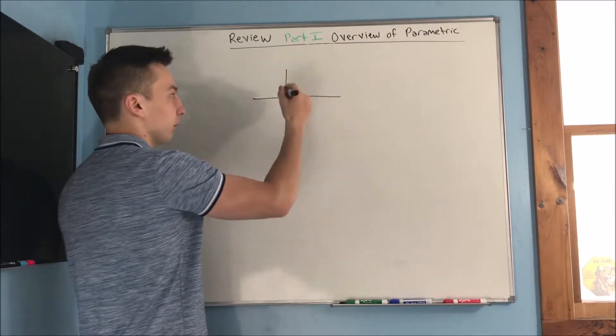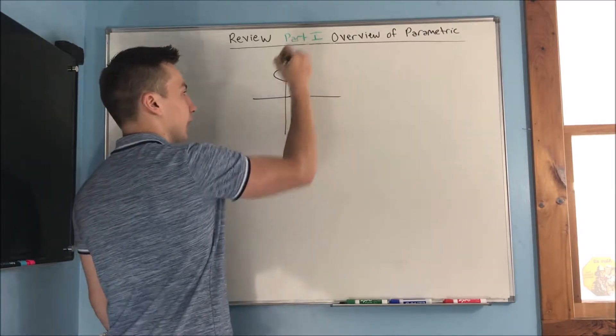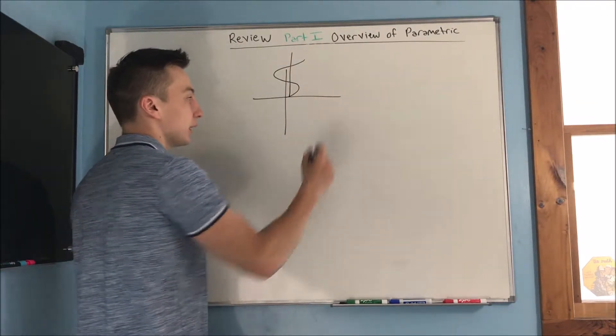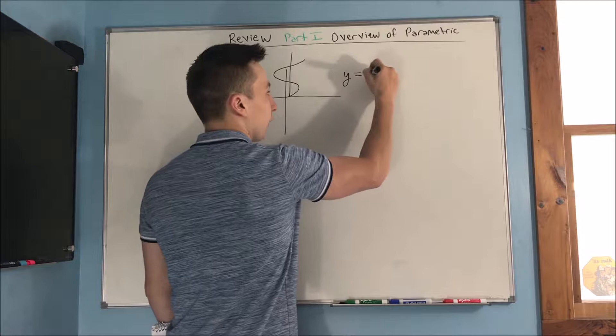Well, for instance, if something doesn't pass a vertical line test, if something fails a vertical line test, then we're not going to be able to describe it as y equaling a function of x.